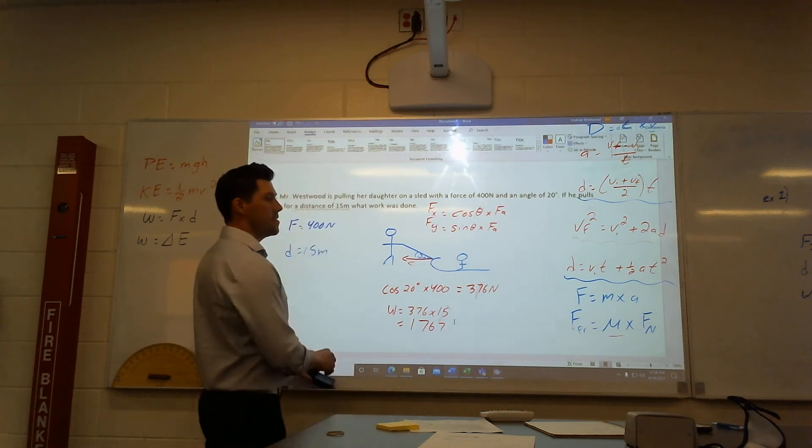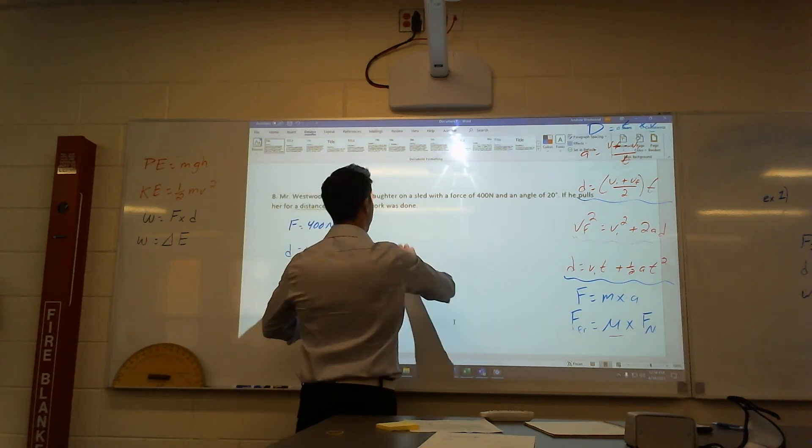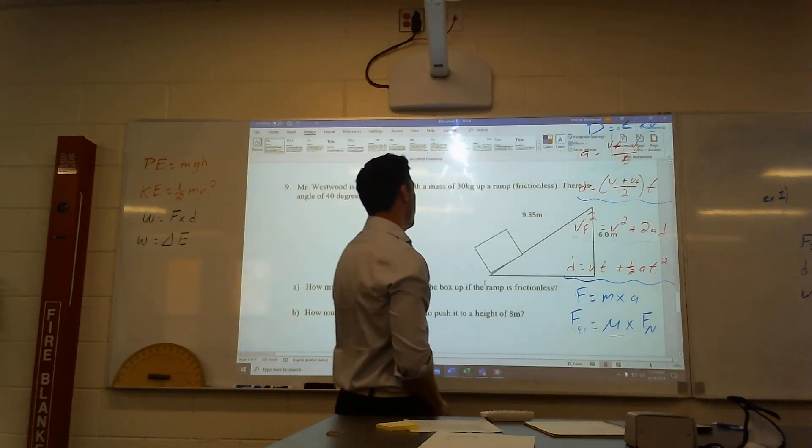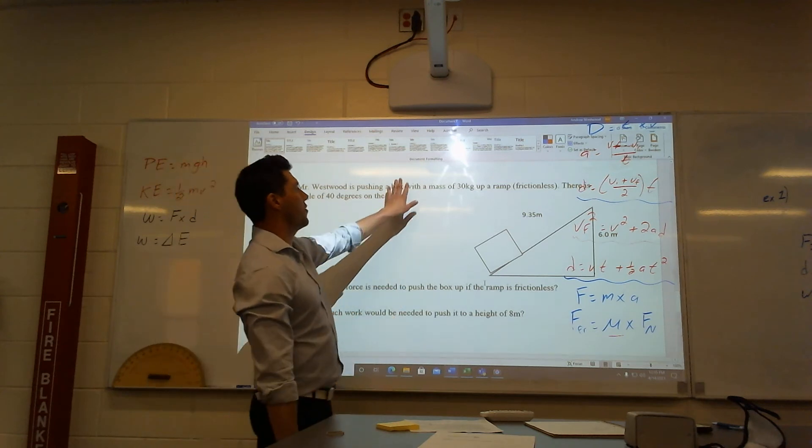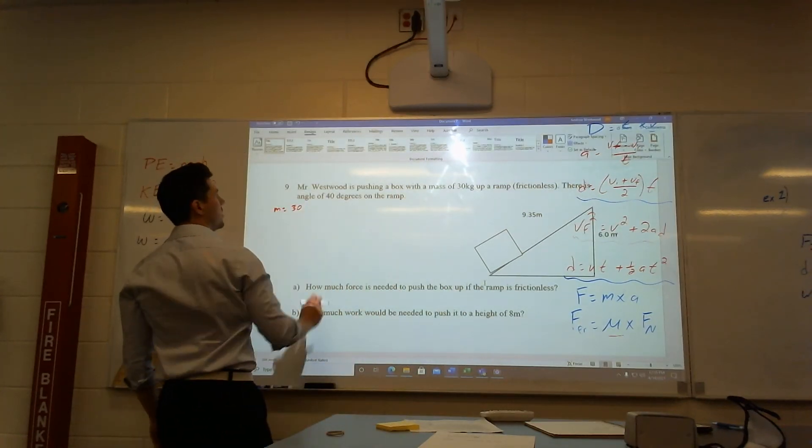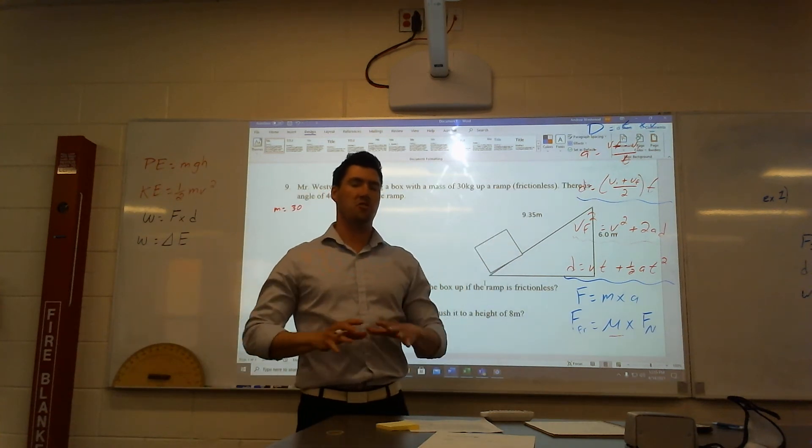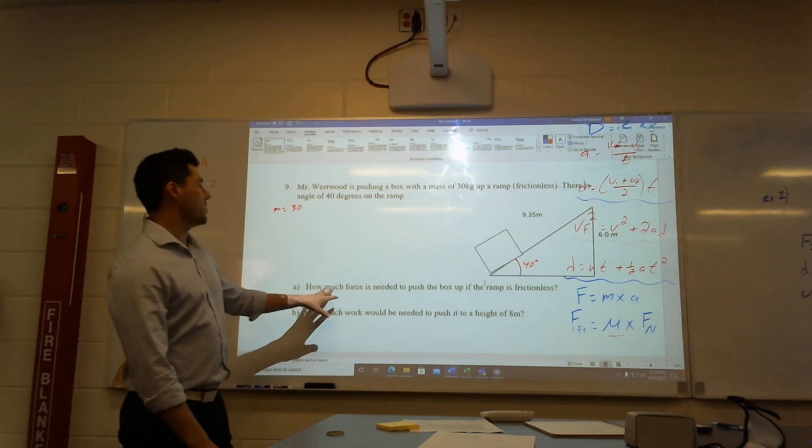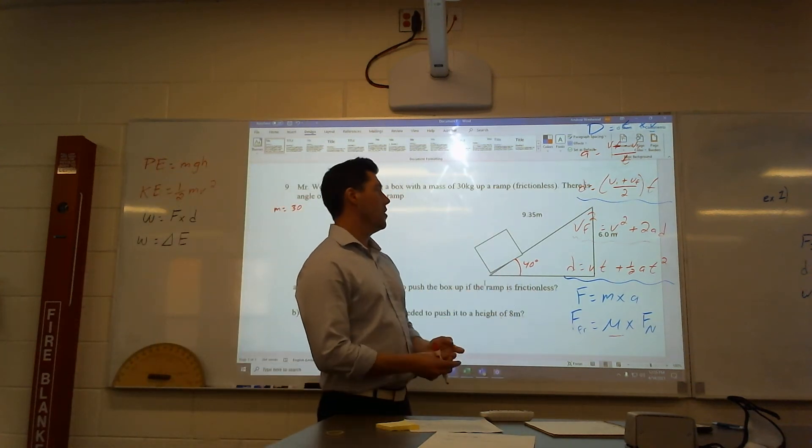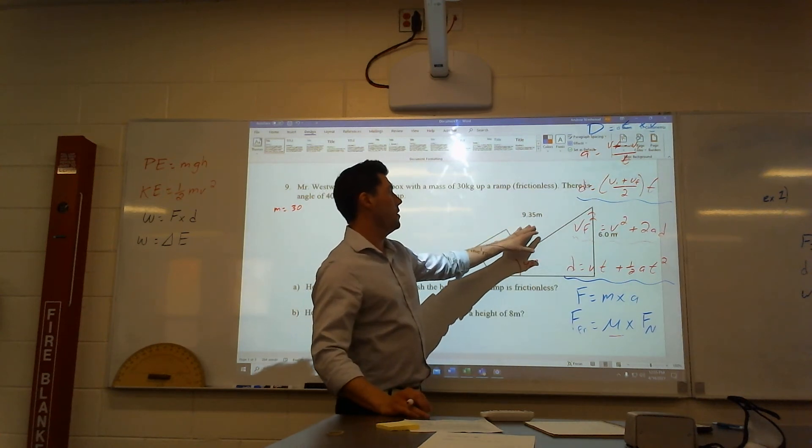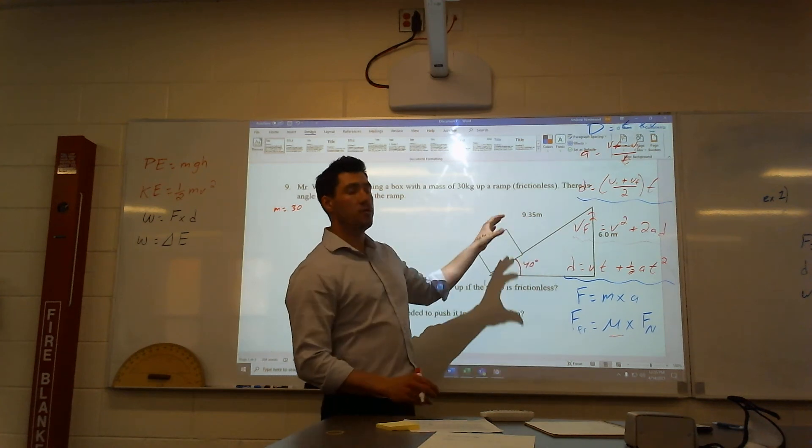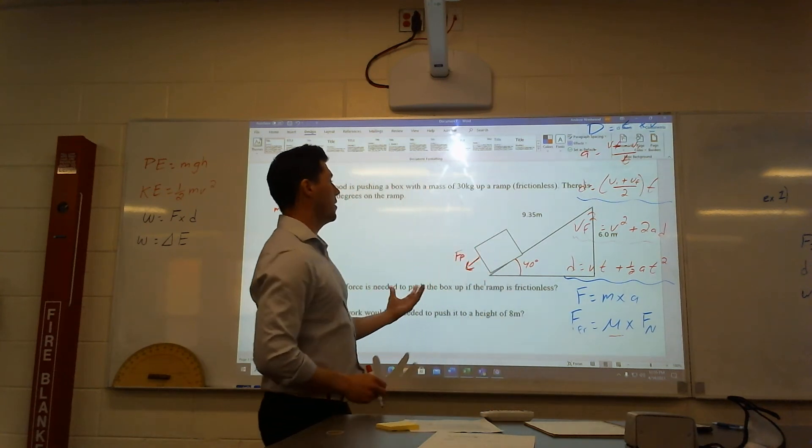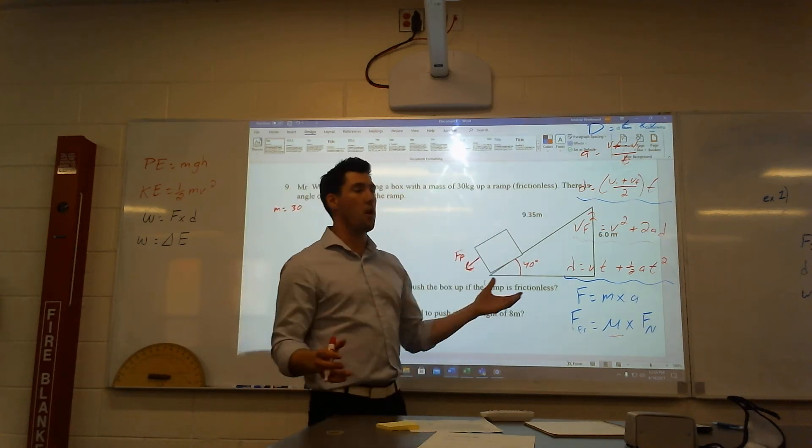After this, if I want to know how fast she was going, you could use this, but for now I just wanted to get across the point that if I'm pulling at any angle, I need to find the actual direction that object's moving. Last question. Again, we're bringing incline planes. These things keep coming back. It says Mr. Westwood is pushing on a box with mass of 30 kilograms, mass equals 30, up a ramp. We're going to say it's frictionless for now just to make it easier. There is an angle of 40 degrees. How much force is needed to push the box up the ramp?